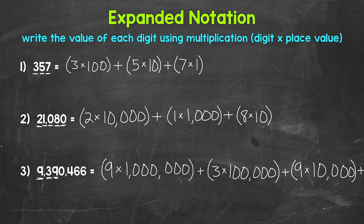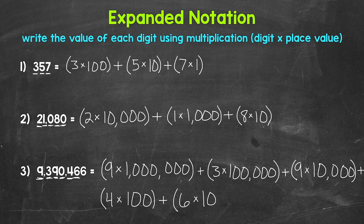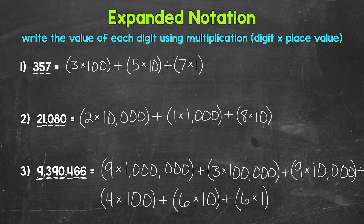And then we can continue. Our next digit is this 0. This 0 is in the thousands place, so we don't have a value to show here — we don't have a value to write for the thousands place. So let's move to the next digit, this 4. So we have a 4 times, and that 4 is in the hundreds place, so times 100. Our next digit is this 6, and it is in the tens place, so times 10. And then lastly, we have another 6 in the ones place — our digit of 6 times, it's in the ones place, so times 1. And that's it. That's our expanded notation for 9,390,466.